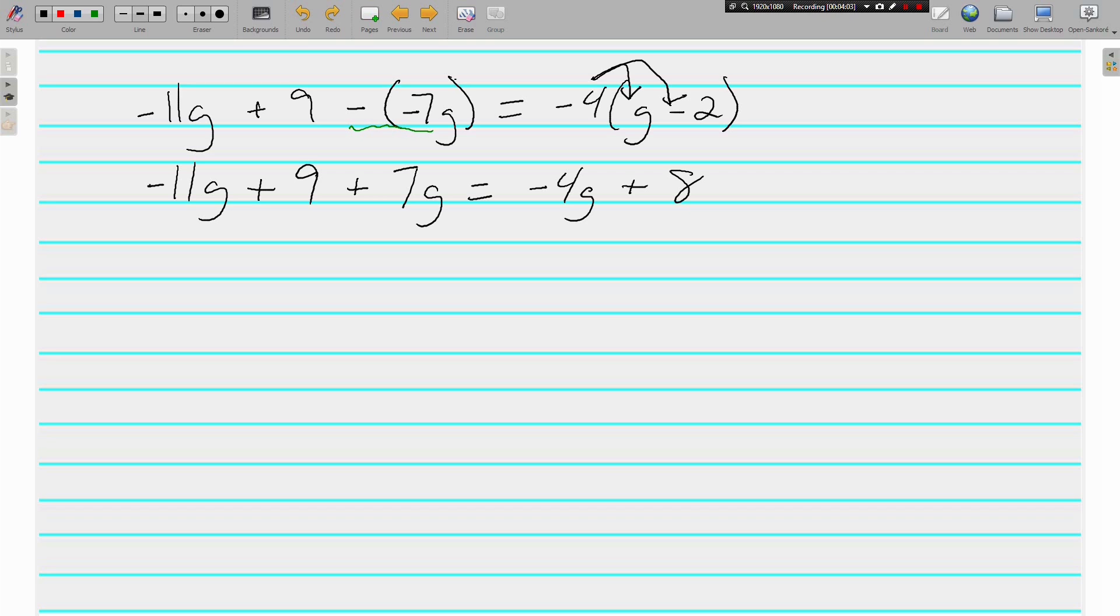All right, simplify each side before we do anything to both sides. We've got a negative 11g and a 7g. Negative 11 plus 7 gives us negative 4g plus 9 is equal to negative 4g plus 8.